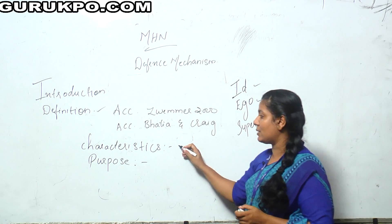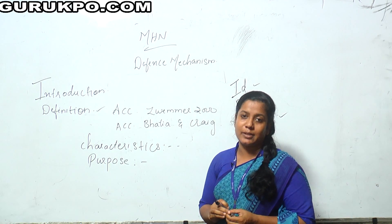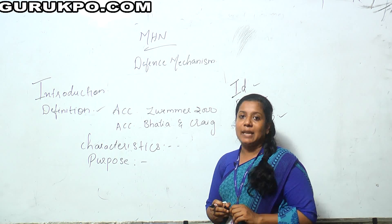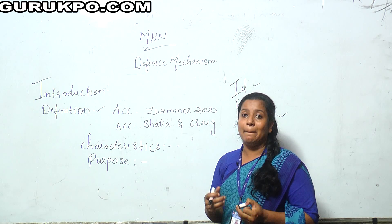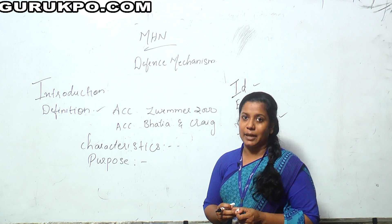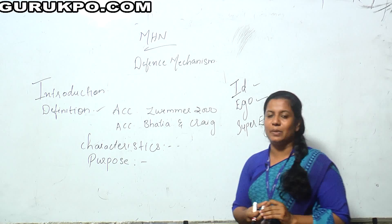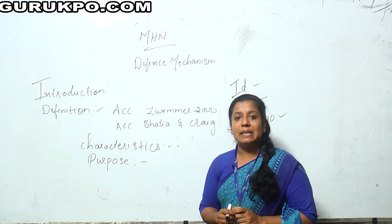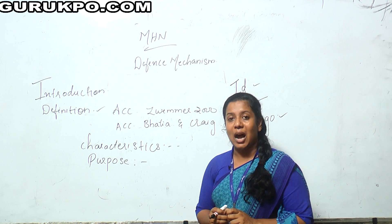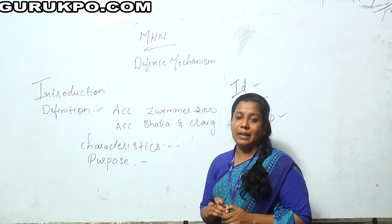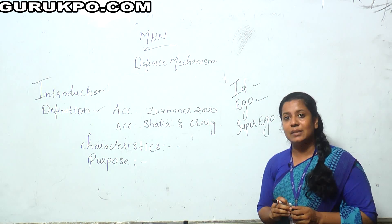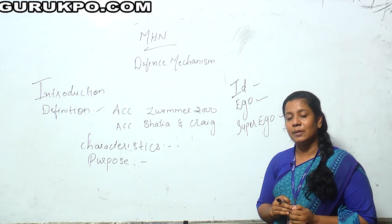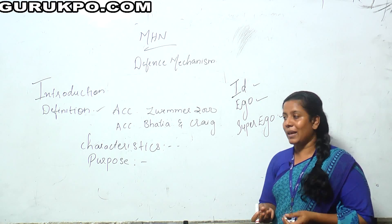Let's see the characteristics. There are mainly two characteristics about defense mechanism: it is used by every individual, and every individual can use many defense mechanisms at a time. Now let's see the purpose. There are a few purposes: it helps to reduce anxiety, it helps to maintain the harmonious relationship between one and another, it protects oneself against psychological distress, and it improves self-respect.